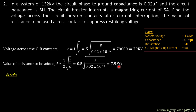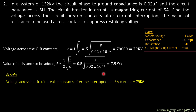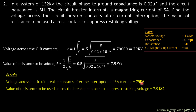The value of resistance to be added across the circuit breaker contacts for resistance switching is 7.9 kilo ohms. The result: voltage across the circuit breaker contacts after interruption of 5 ampere magnetizing current is 79 kV, and the resistance to suppress restriking voltage is 7.9 kilo ohms.